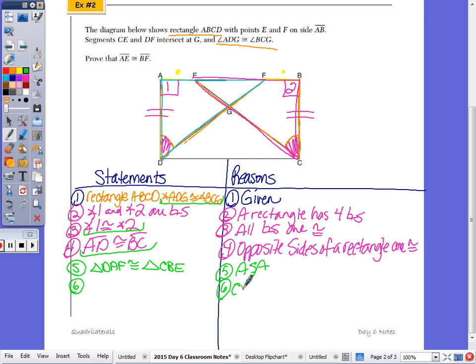Where do we want to use the CPCTC on what two corresponding parts? Remember, CPCTC stands for corresponding parts of congruent triangles are congruent. Yes, AF congruent to BE as they're overlapping right here. So AF congruent to BE.